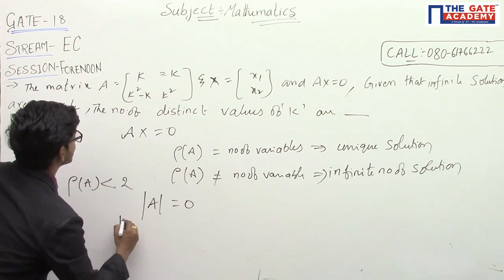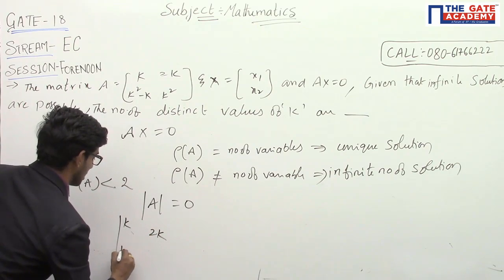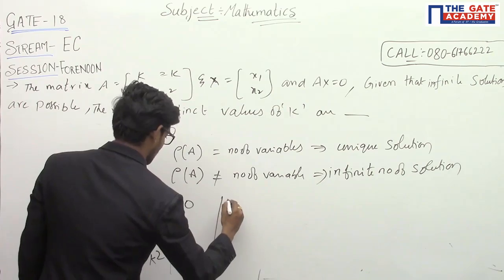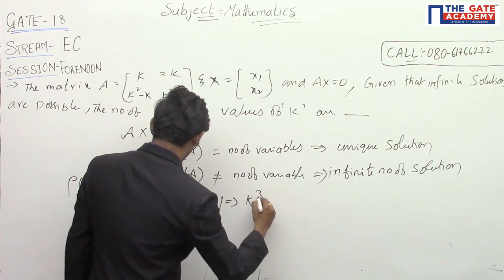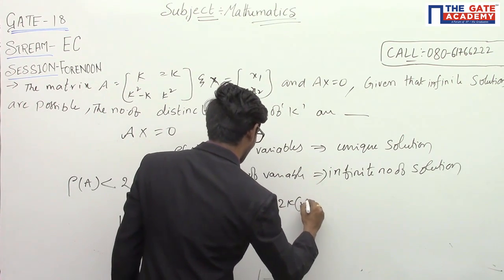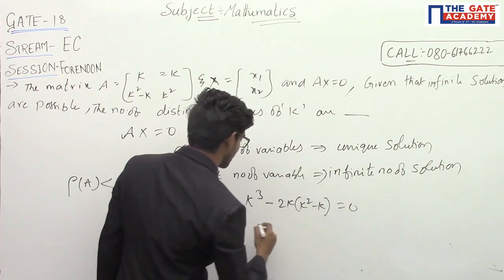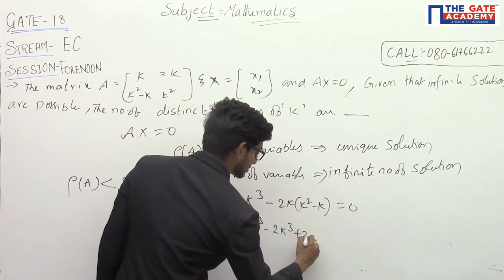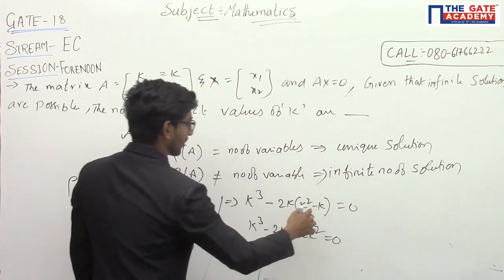Now, determinant of A is the determinant of k, 2k. K cube minus 2k square minus k square minus k equal to 0. K cube minus 2k cube plus 2k square is 0.